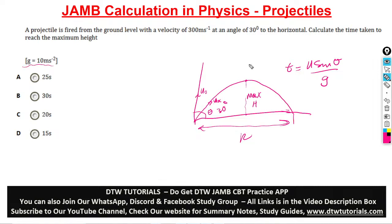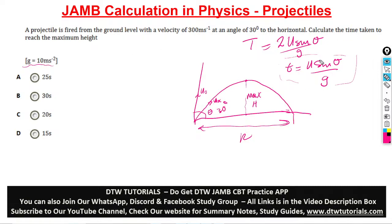You must know that time taken to reach maximum height is different from the total time of flight. For total time of flight, capital T equals 2u sine theta over g. Don't make the mistake of using that formula for time taken to reach maximum height — use t equals u sine theta over g. So here we have t equal to our initial velocity of 300 meters per second.